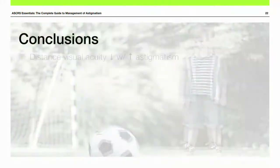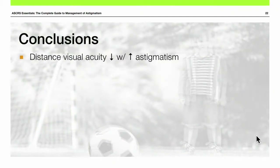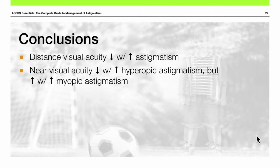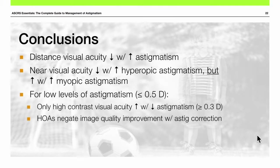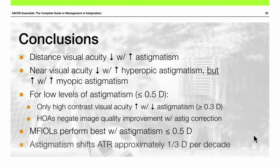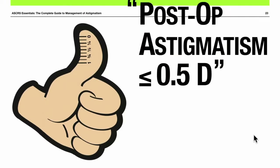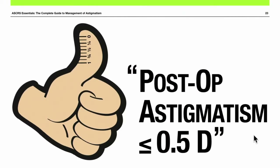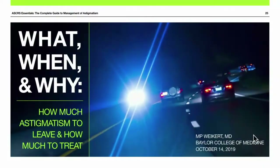To summarize: distance visual acuity decreases as astigmatism increases. Near visual acuity decreases with increasing hyperopic astigmatism but actually improves with myopic astigmatism. For low levels of astigmatism, only high-contrast acuity improves as we decrease astigmatism, and that effect goes away after reduction to 0.3 diopters. Higher-order aberrations negate image quality improvements at low astigmatism levels. Multifocal IOLs perform best with less than half a diopter. My rule of thumb: aim for less than half a diopter; if pushing the envelope, shoot for 0.3 diopters — and leave just a touch of residual with-the-rule astigmatism to compensate for the age-related shift.